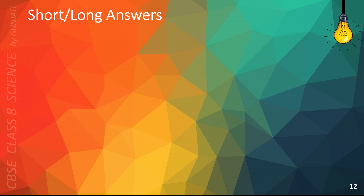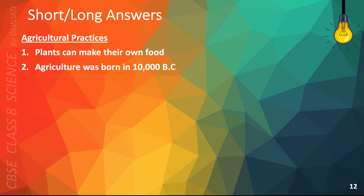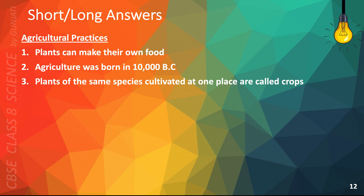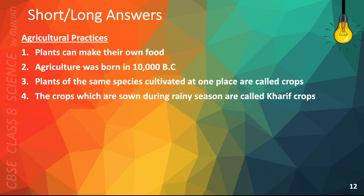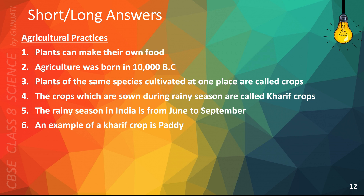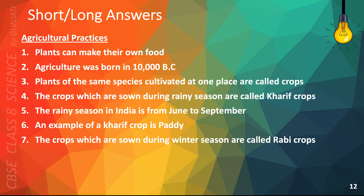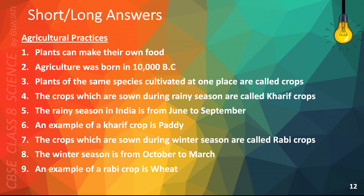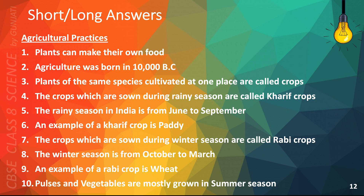As I mentioned earlier, this is the slide where I've arranged the multiple choice questions to help you answer long or short questions on agricultural practices. Key points: Plants can make their own food. Agriculture was born in 10,000 B.C. Plants of the same species cultivated at one place are called crops. Crops sown during rainy season are called Kareef crops. The rainy season in India is from June to September. An example of a Kareef crop is Paddy. Crops sown during winter season are called Robby crops. The winter season is from October to March. An example of a Robby crop is wheat. Pulses and vegetables are mostly grown in summer season.